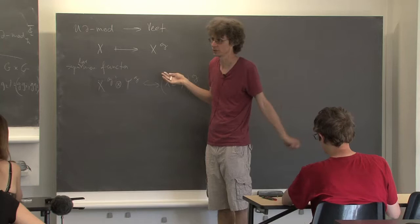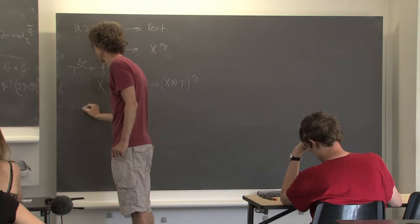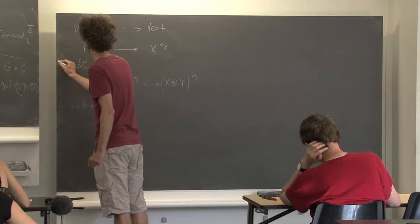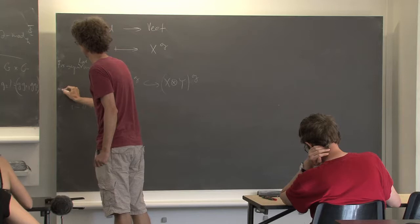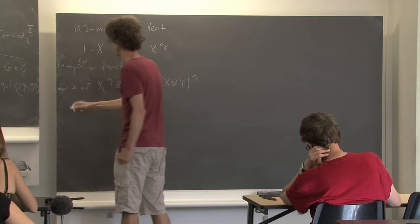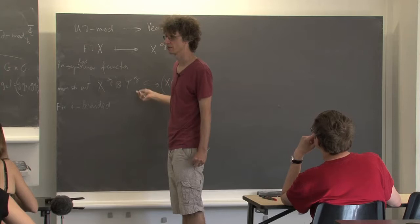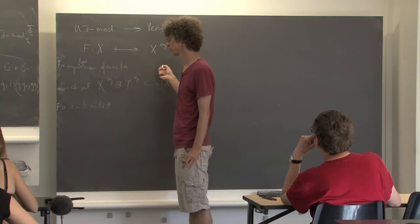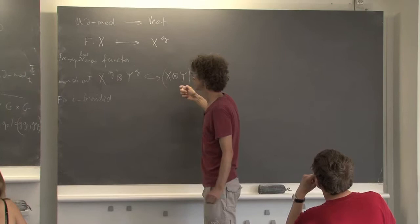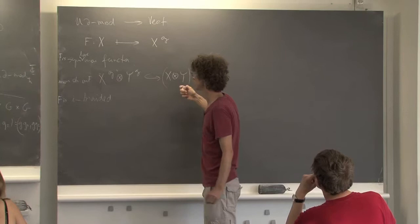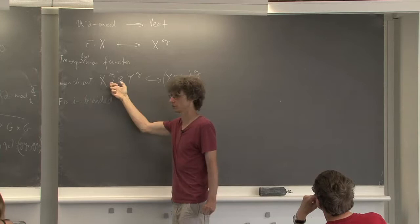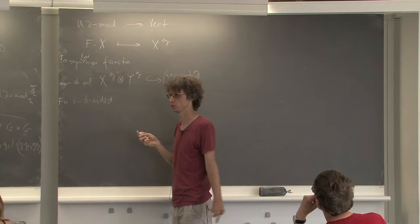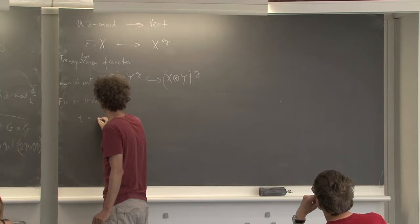This functor is monoidal in this very easy way — nothing strange quantum is happening here. So it's a symmetric monoidal functor. But what is important is that it is also I-braided. Let me call this F. F is monoidal, and F is I-braided — that's the thing we proved. It's not so difficult, just because when you restrict yourself to those invariant things, this action of T is going to disappear.